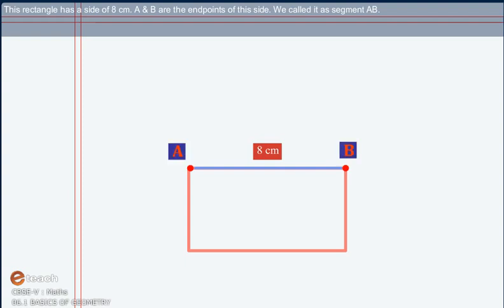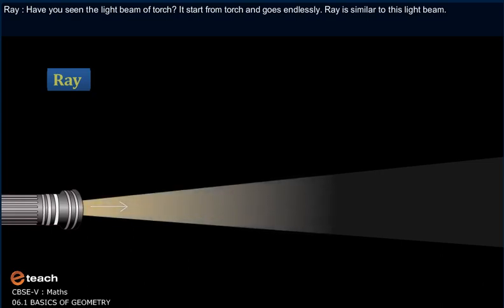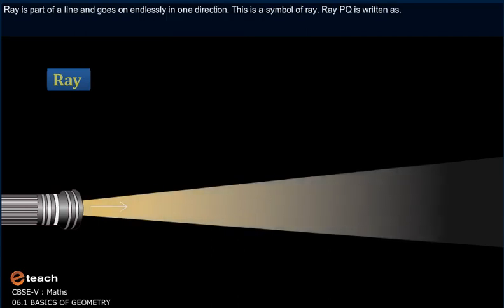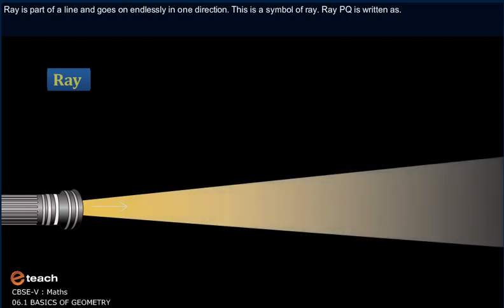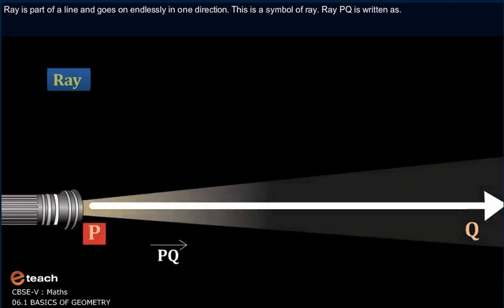Ray: Have you seen the light beam of torch? It starts from torch and goes endlessly. Ray is similar to this light beam. Ray is a part of a line and goes on endlessly in one direction. This is symbol of Ray. Ray PQ is written as...